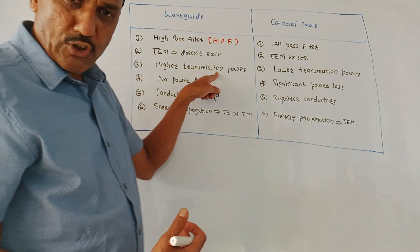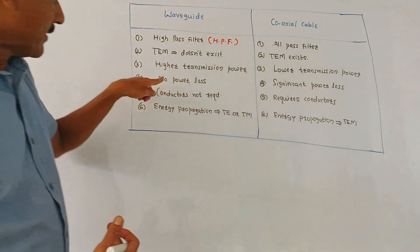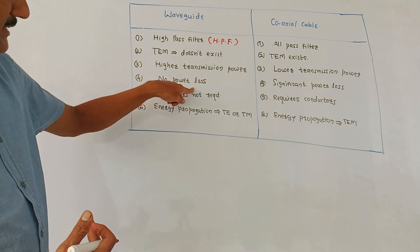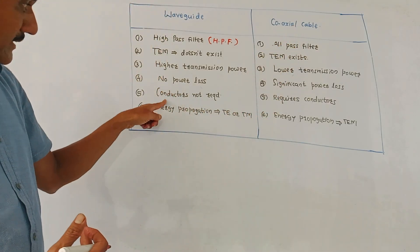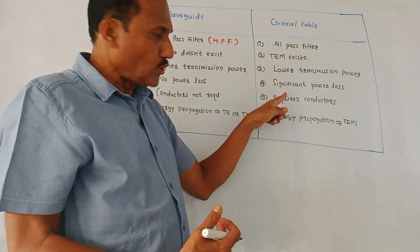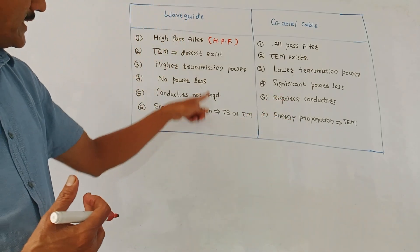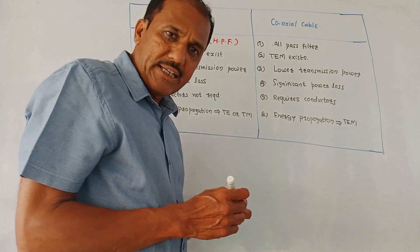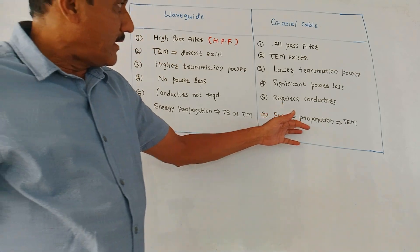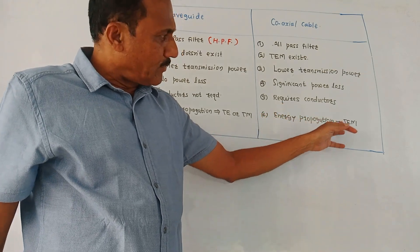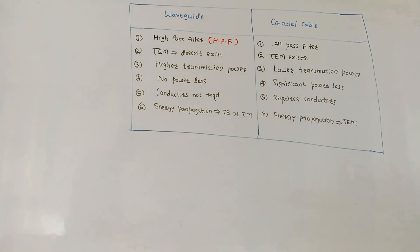Waveguides are used for higher transmission of power. Coaxial cable is used for lower transmission power. Ideally, there are no power losses in a waveguide, whereas there is a significant amount of power loss in coaxial cable. Conductors are not required in a waveguide, whereas in coaxial cable, copper conductors are usually used. Energy propagation in a waveguide takes place with the help of TE or TM waves, while in coaxial cable, energy propagation is via the transverse electromagnetic mode.